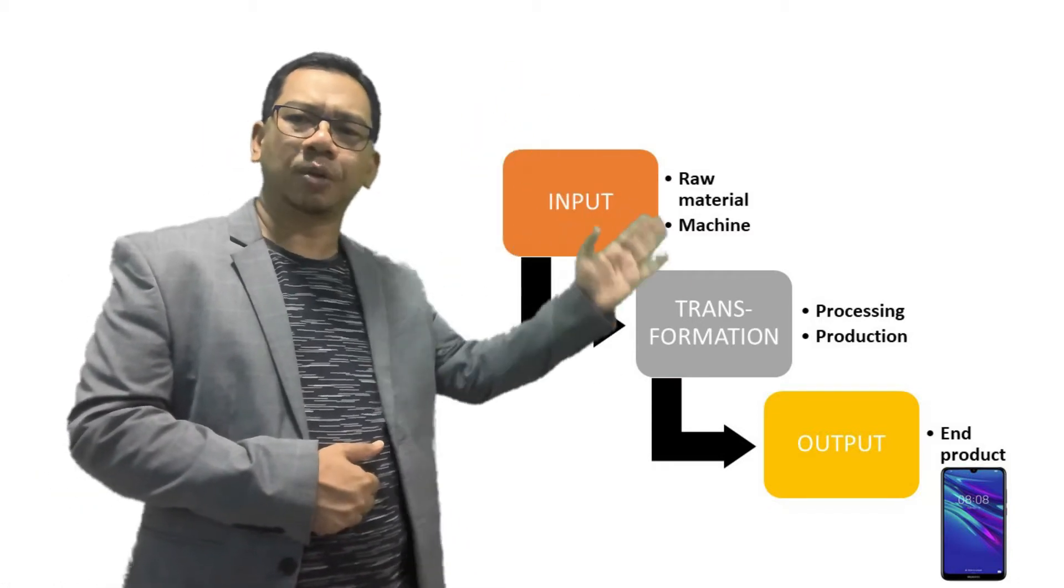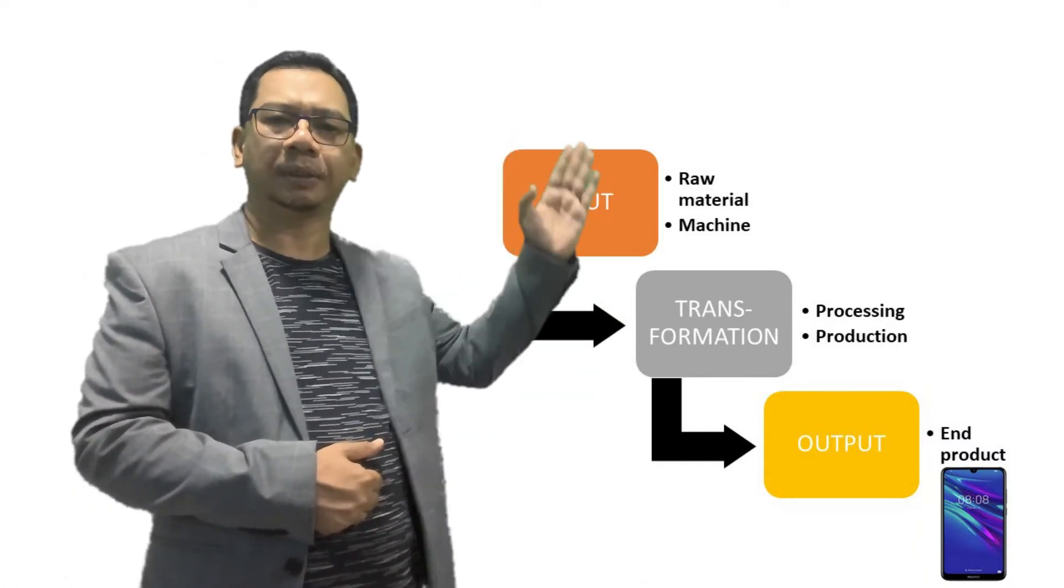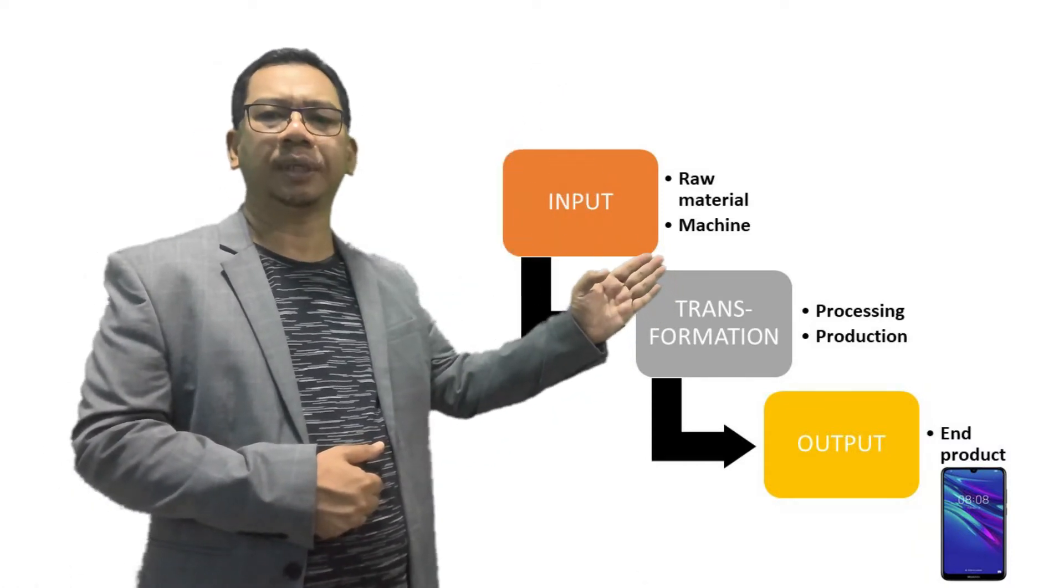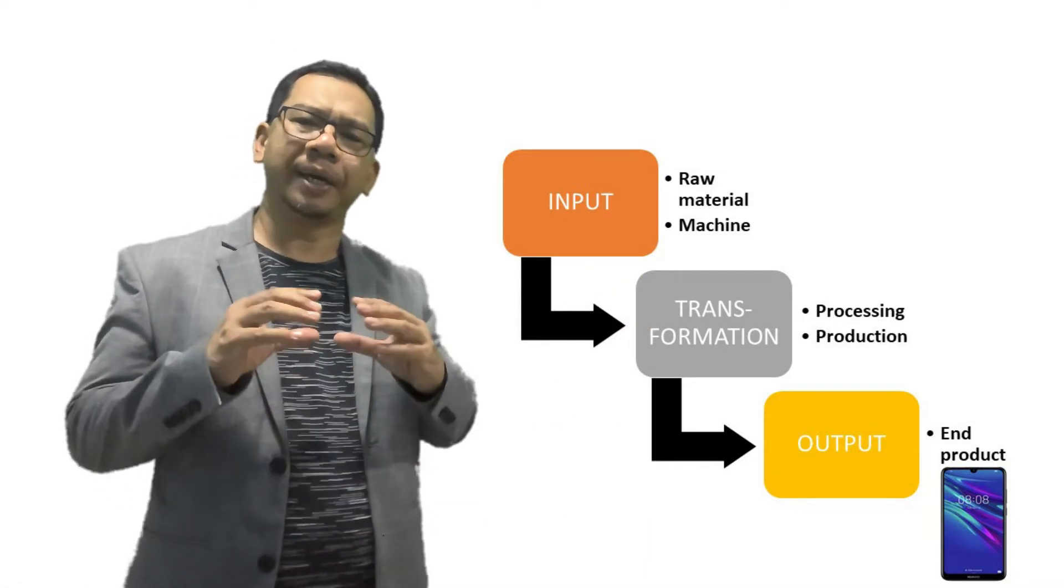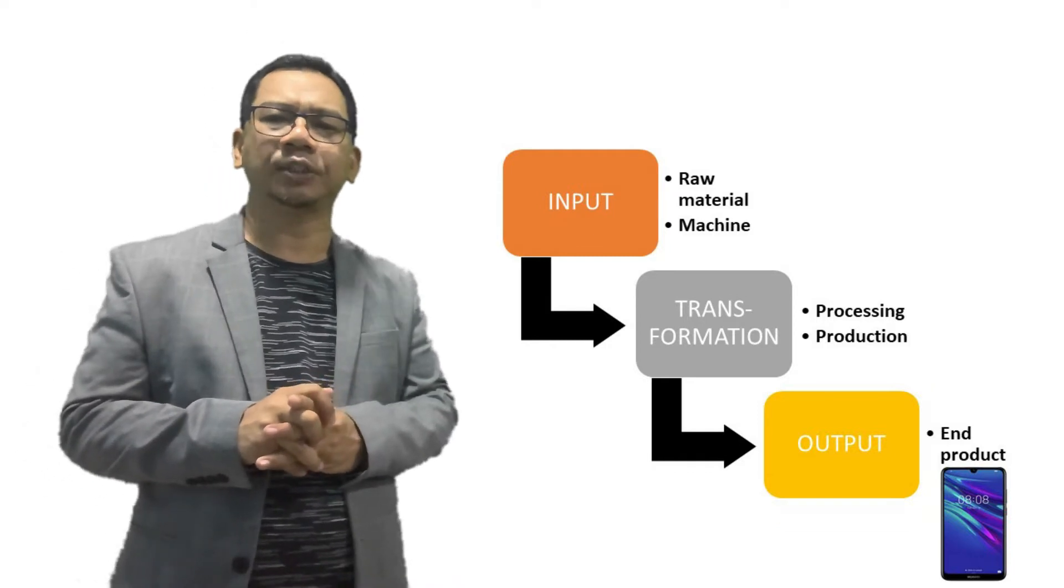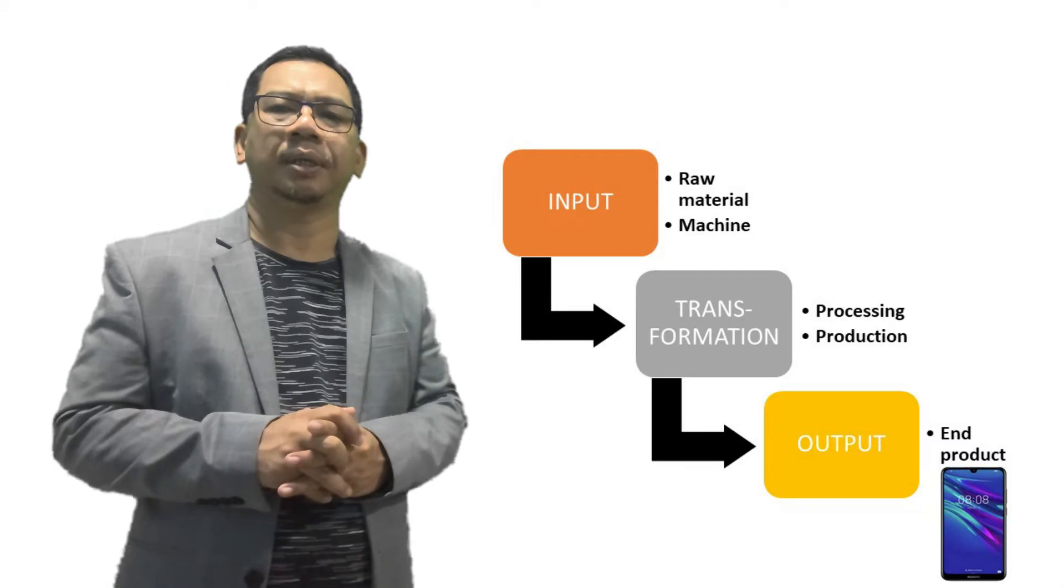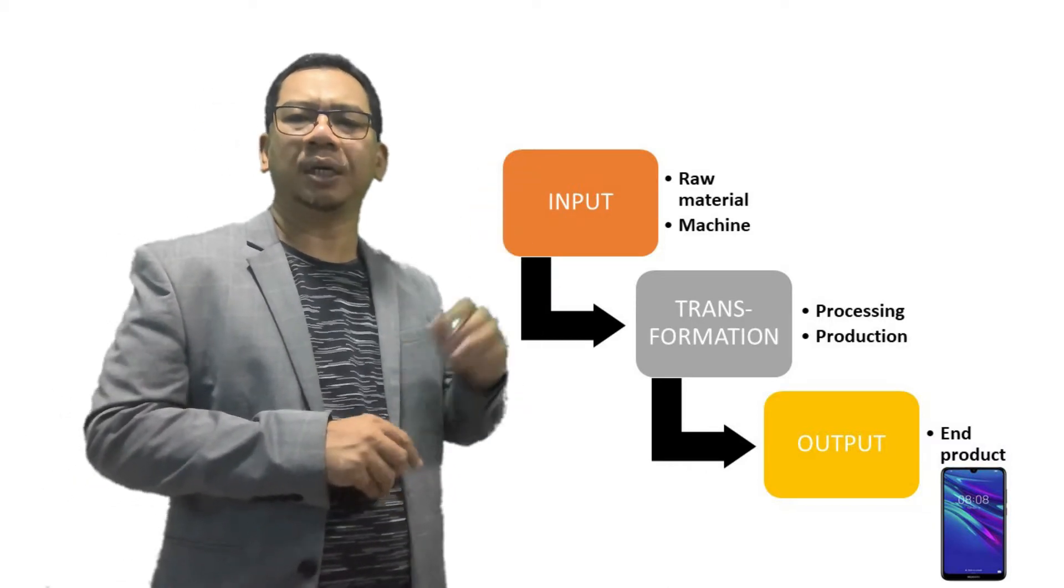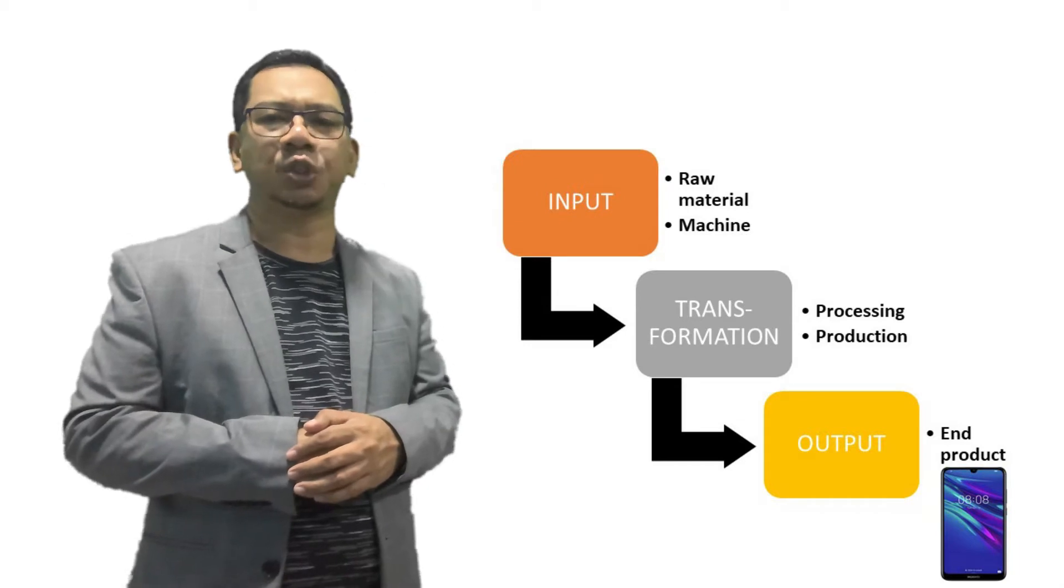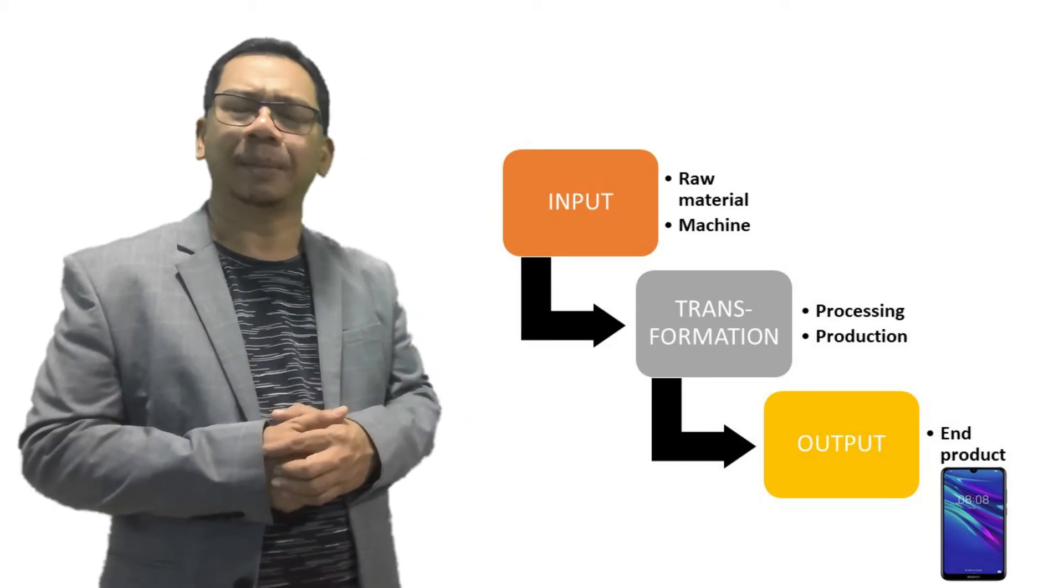So, this is a complete view of operation. We have inputs, transformation process, and the outputs. At a micro level, an operation manager has to manage these three stages. The areas of concern in managing the inputs are, for example, quality issues, sourcing and purchasing, supplier selection, and inventories.